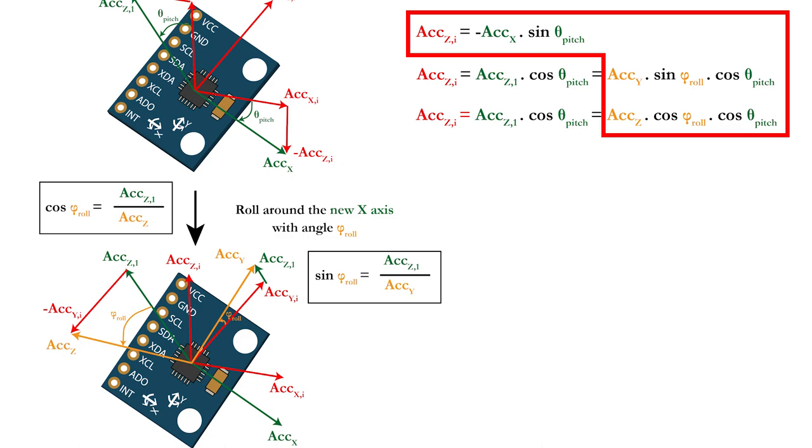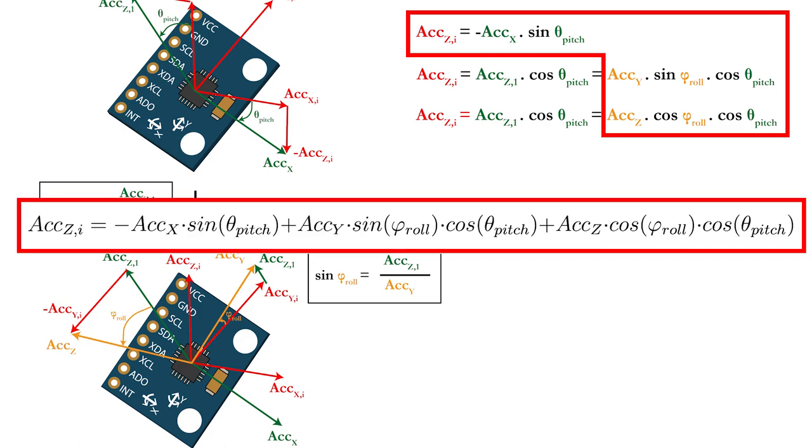Now you have three equations that express a component of the acceleration in the inertial Z axis in function of the roll and the pitch angles and the accelerometer X, Y and Z axis. By adding these three equations to each other, you are able to calculate the full acceleration in the inertial Z axis.